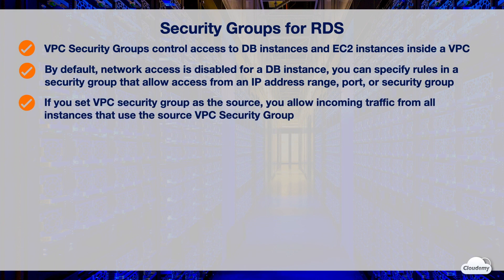By specifying a VPC security group as the source, you allow incoming traffic from all instances that use the source VPC security group. VPC security groups can have rules that govern both inbound and outbound traffic. Normally the outbound rules do not apply to DB instances, because traffic is normally initiated from DB clients.